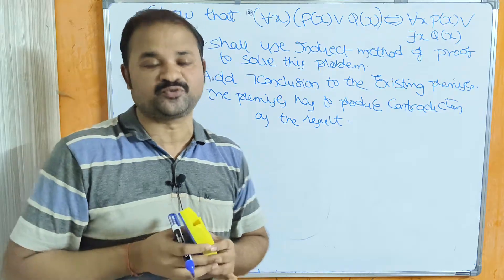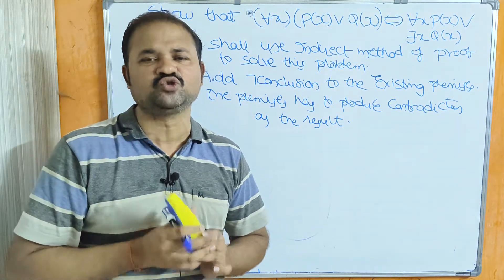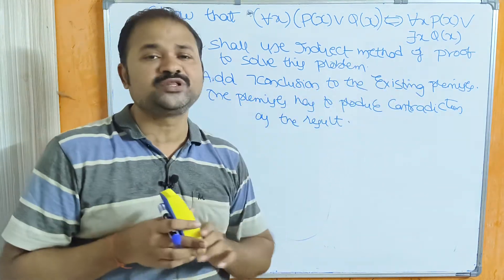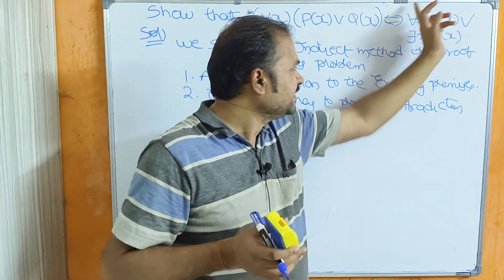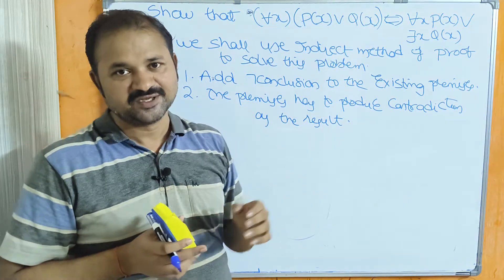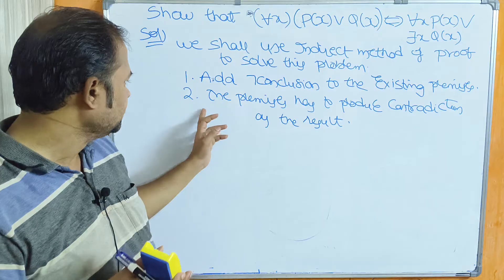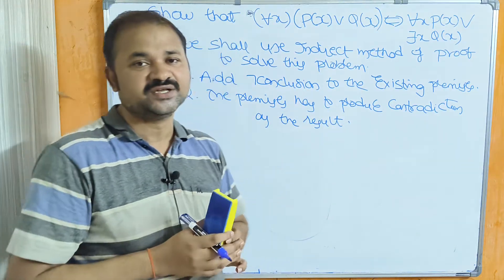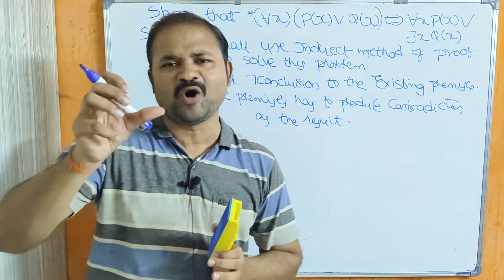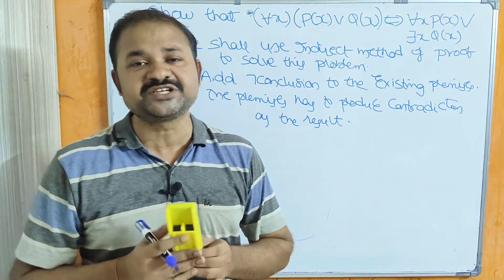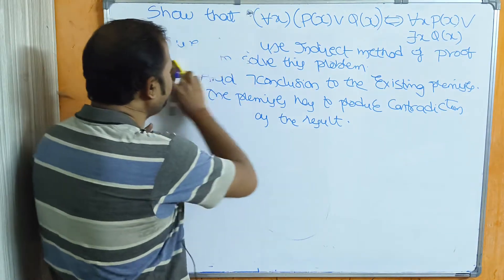Because the existential quantifier is given here, this is a special problem. In order to solve this problem we have to use the indirect method of proof. The indirect method of proof means we have to follow two steps. Step one is: add the negation of the conclusion to the existing premises. The premises then have to produce a contradiction — that is, false — as the result.